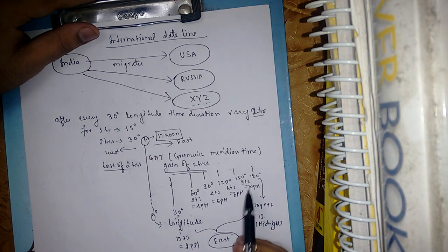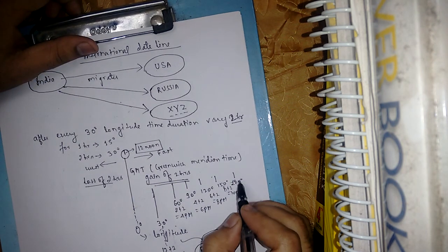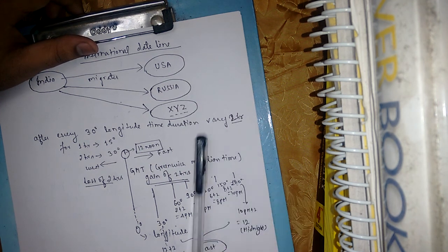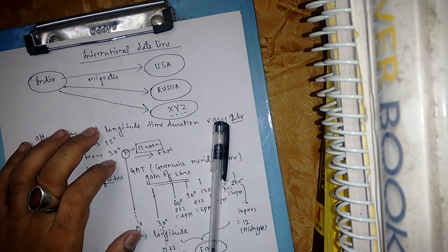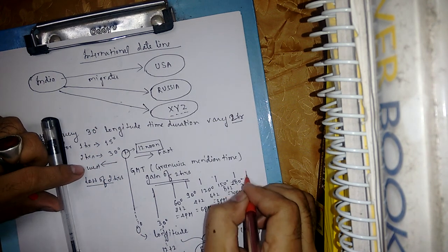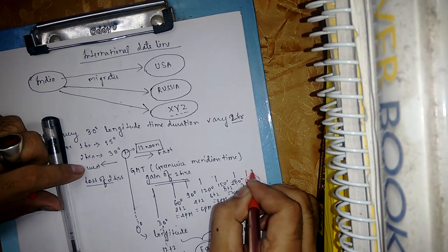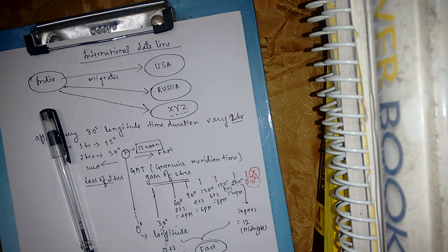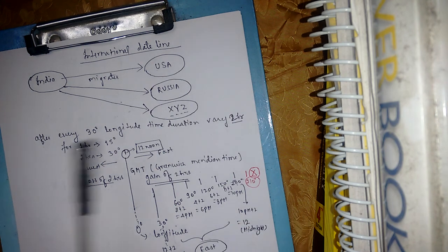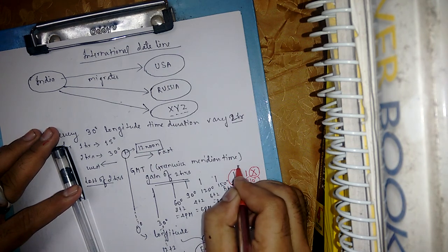People start thinking: what will happen if we go beyond 180 degrees — like 210 degrees? But 210 degrees east is not possible. We have to stop at 180 degrees east only.